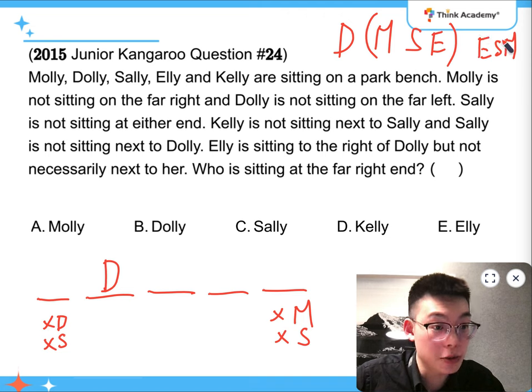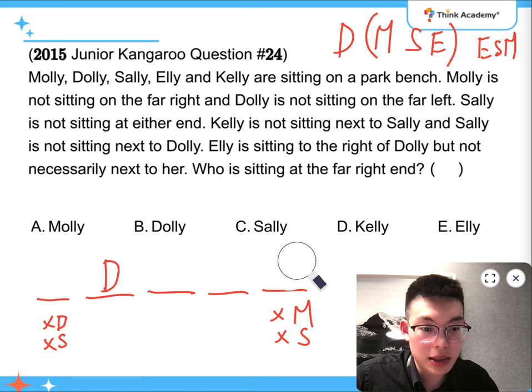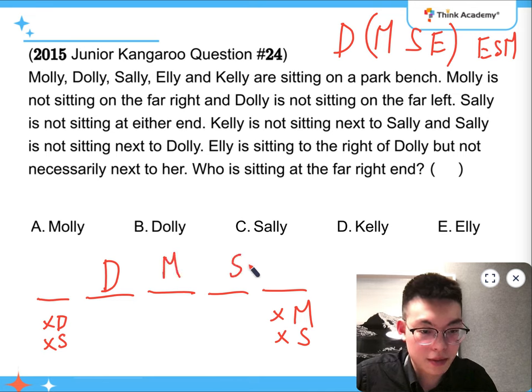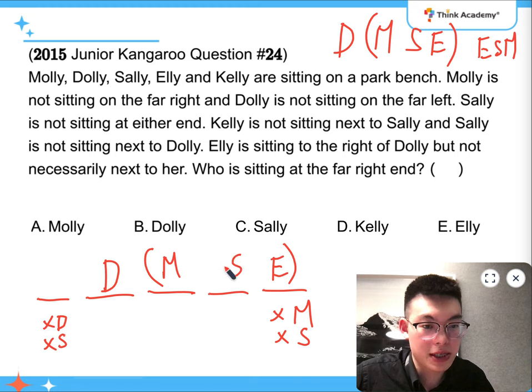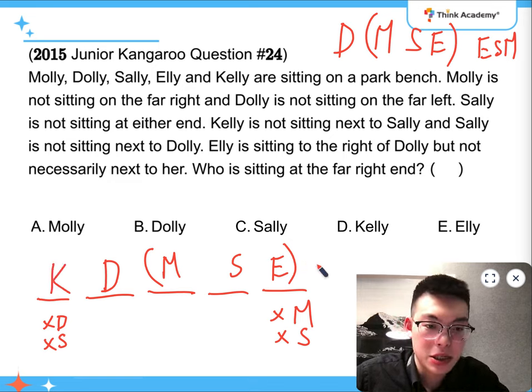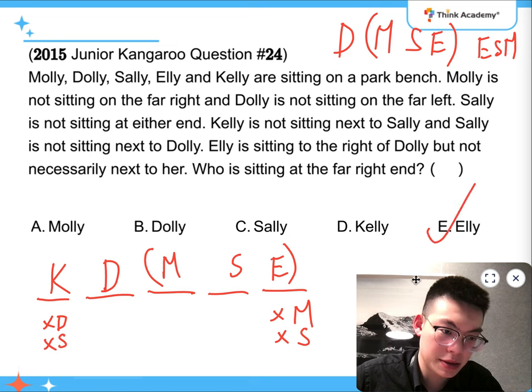So it means that the Molly, Sally, Ellie combination would work, because these three has to be stuck together with Sally in between Molly and Ellie. So this is Kelly. So it means that the answer is Ellie for E.